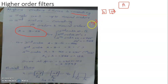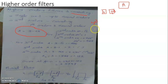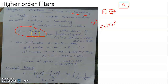To construct a second order filter, the gain must satisfy a = 3 - 2k, where the second order Butterworth polynomial is s² + √2·s + 1. The coefficient of s is √2, so 2k = √2. Therefore the mid-band gain is 3 - √2 = 3 - 1.414, which equals 1.586.